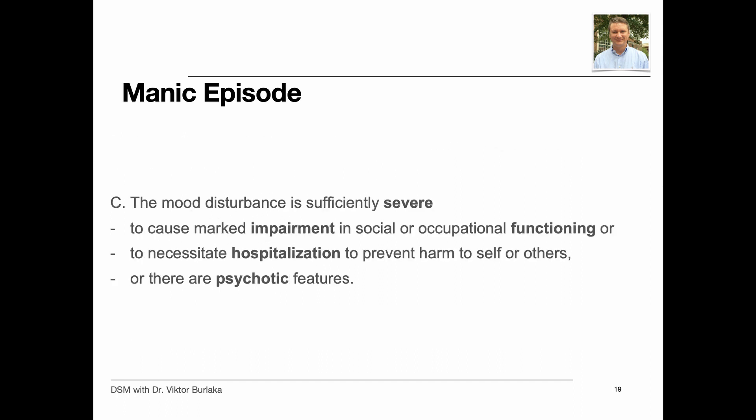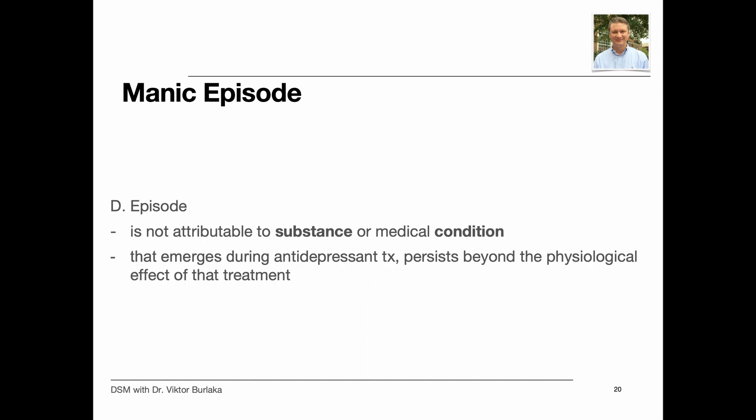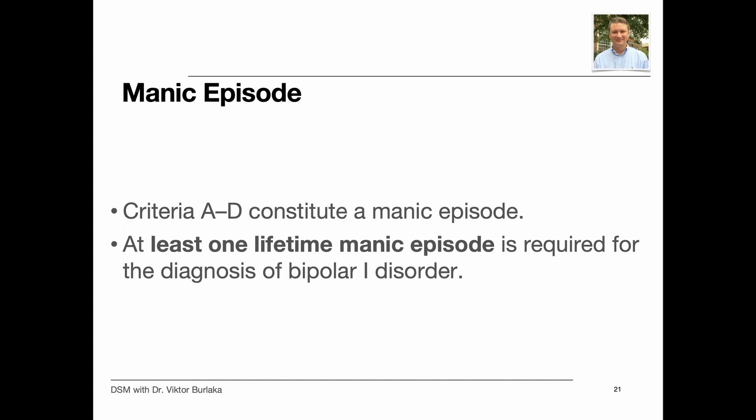Criterion C: The mood disturbance is sufficiently severe to cause marked impairment in social or occupational functioning, or to necessitate hospitalization to prevent harm to self or others, or there are psychotic features. Criterion D: The episode is not attributable to the physiological effects of a substance or another medical condition. If a full manic episode emerges during antidepressant treatment and shows symptoms beyond the physiological effect of that treatment, this represents sufficient evidence for a manic episode and therefore a Bipolar 1 diagnosis. Criteria A through D constitute a manic episode, and at least one lifetime manic episode is required for the diagnosis of Bipolar 1 disorder.